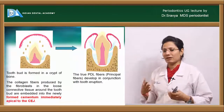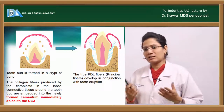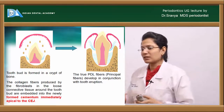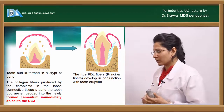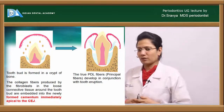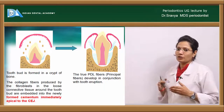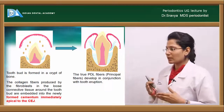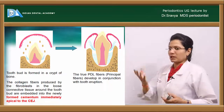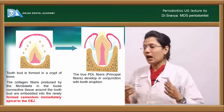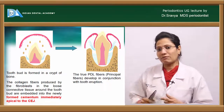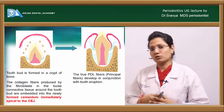The periodontal ligament develops just before tooth eruption starts. As the tooth bud is erupting and formed into a crypt of bone, the collagen fibers produced by fibroblasts in the loose connective tissue around the tooth bud are embedded into the newly formed cementum just immediately apical to the cementoenamel junction. As the tooth erupts into the oral cavity, new fibers are forming, and the true periodontal ligament fibers are completely formed only once the tooth erupts into the oral cavity.